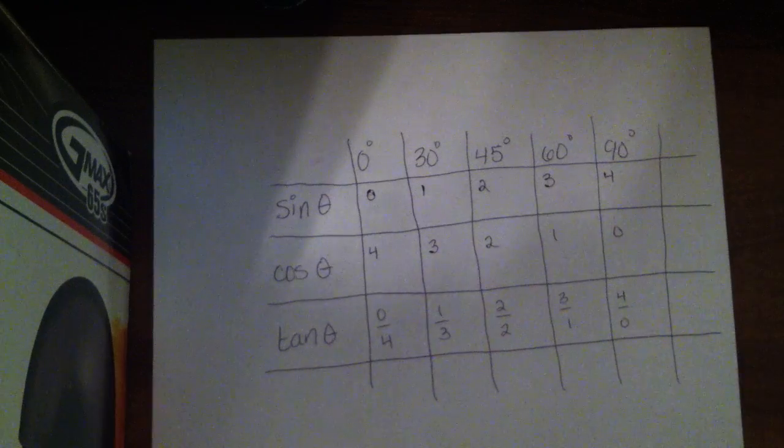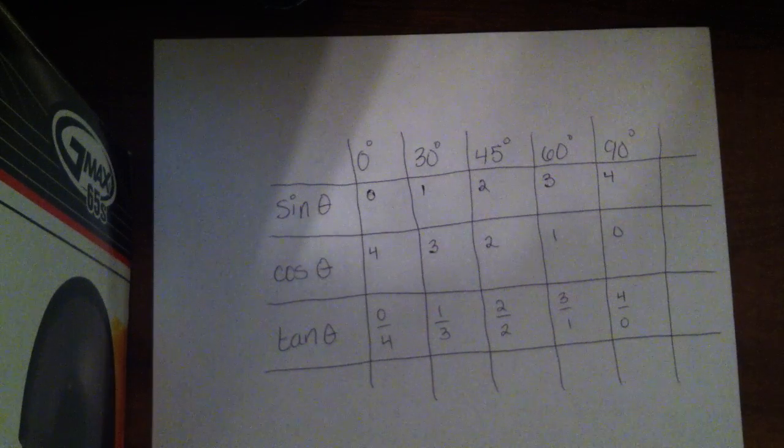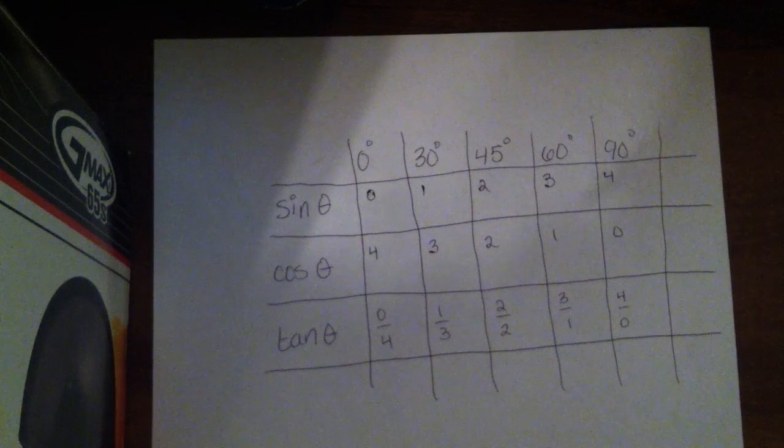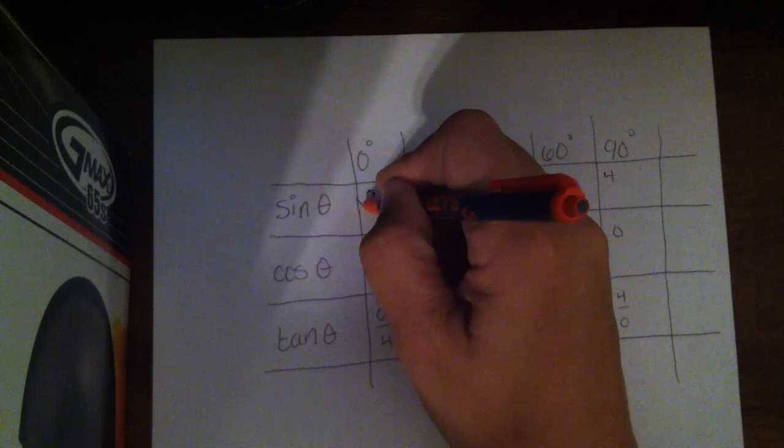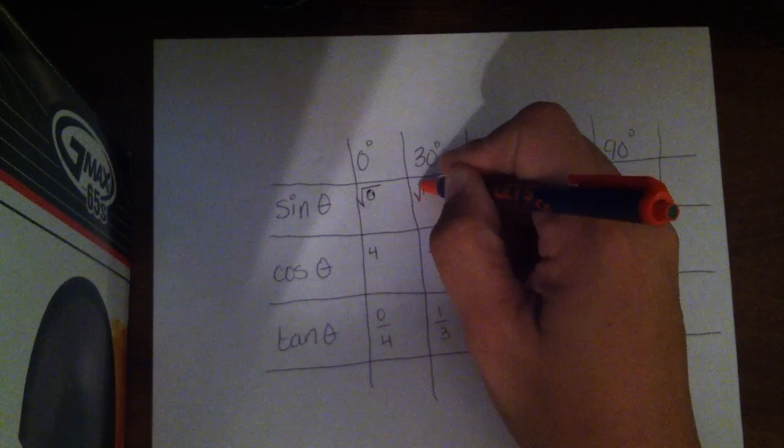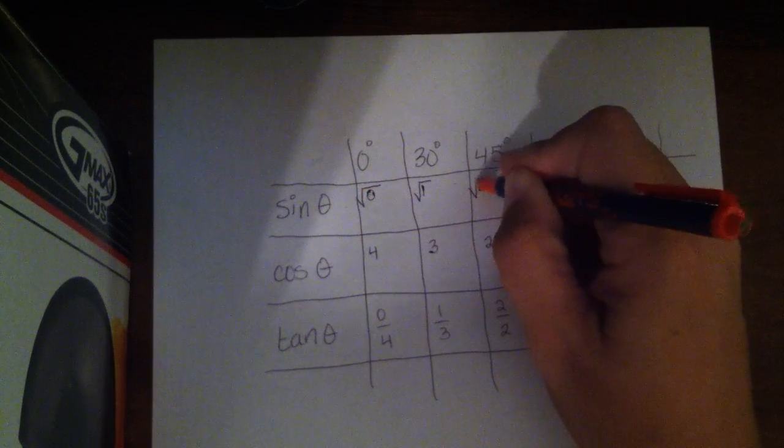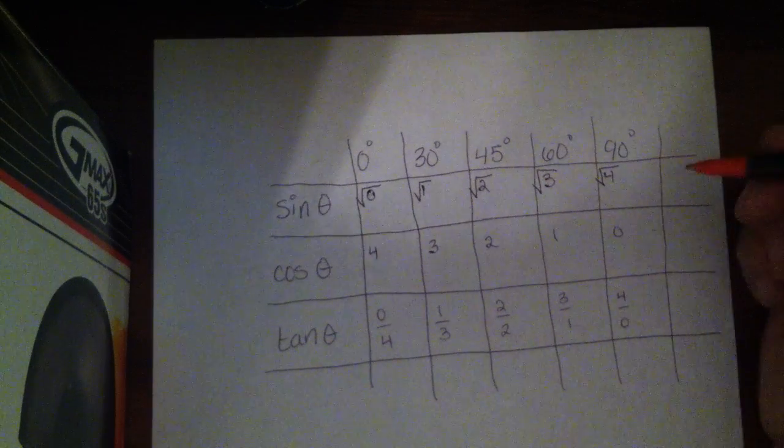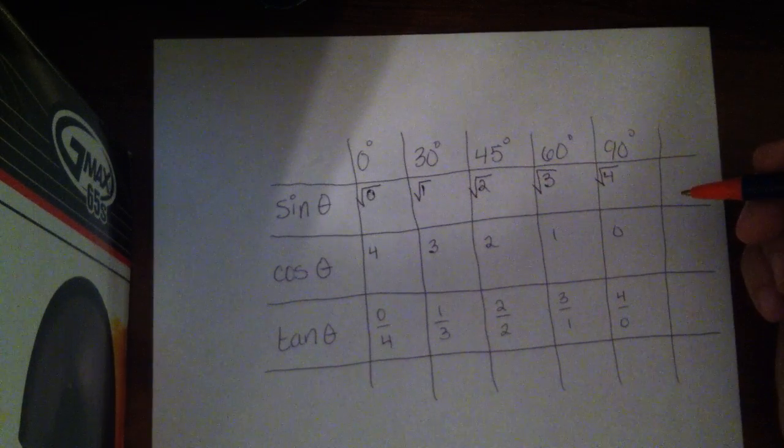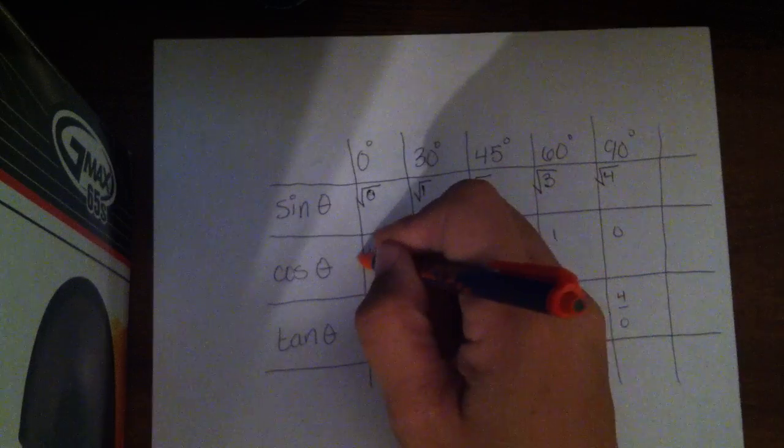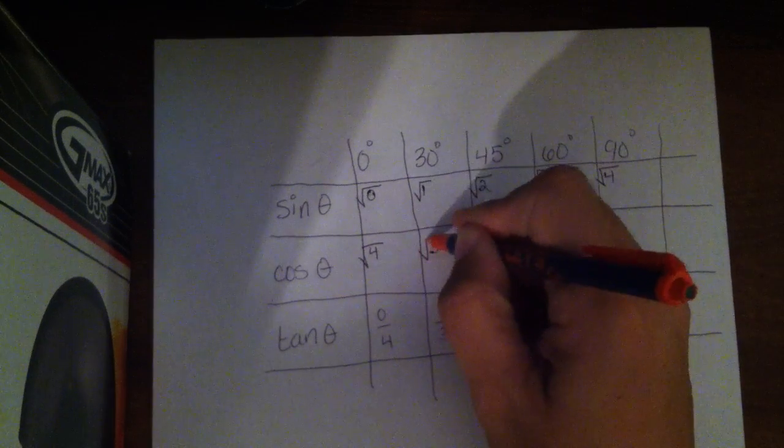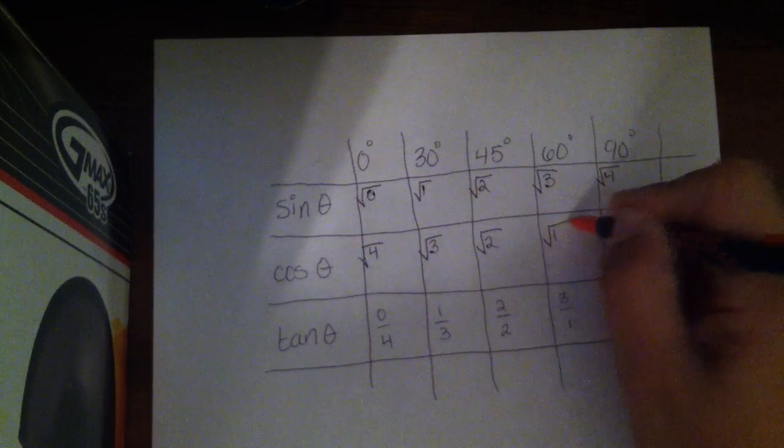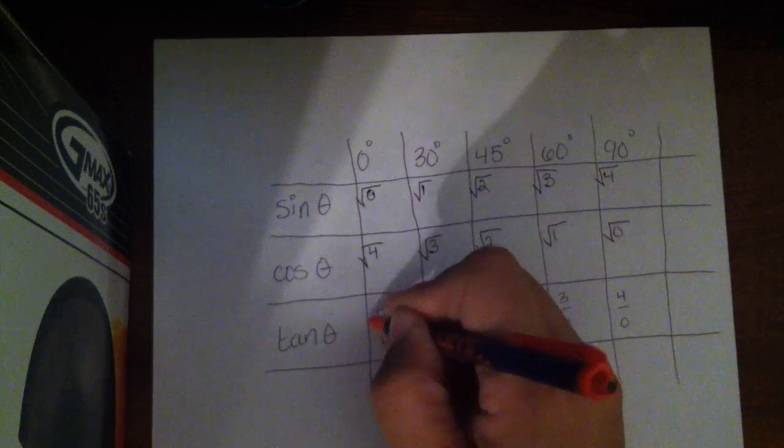The next step is to put a square root symbol around every single number. Now, I know not every single one of them needs it because some of them simplify to the exact same thing, or it doesn't really make any sense, but just to make the pattern easier to remember, we just say throw a square root around everything.